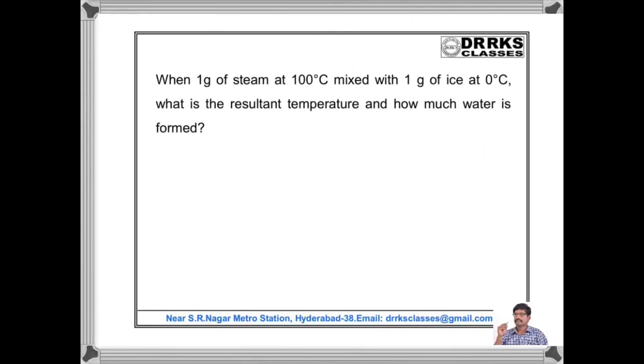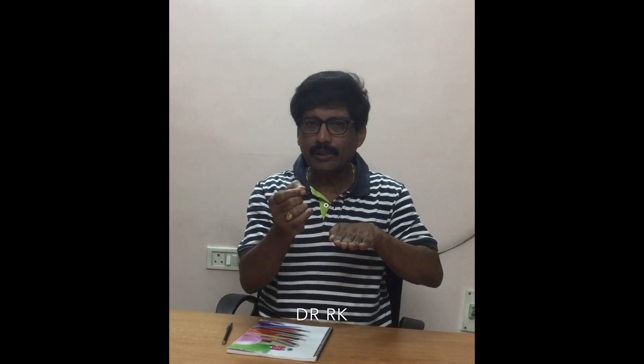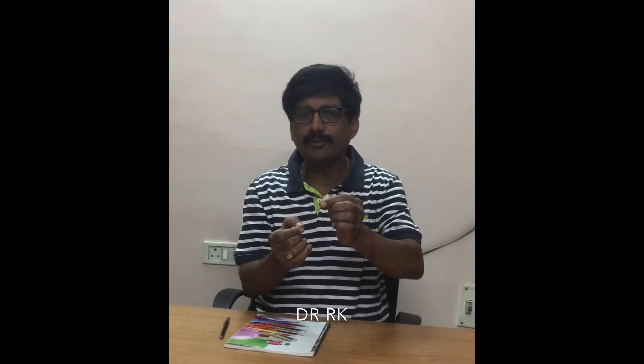Look at this interesting problem where 1 gram of steam at 100°C is mixed with 1 gram of ice at 0°C. What is the resultant temperature and how much water is formed? Heat is lost by steam and gained by ice. To melt the ice takes 80 Calories; to raise the temperature from 0°C to 100°C takes 100 Calories — so a total of 180 Calories is absorbed from the steam. Thus, 180 = M'·540, giving the mass of steam condensed M' = 1/3 gram. So 2/3 gram remains as steam and the resultant temperature is 100°C.